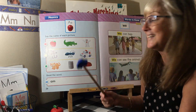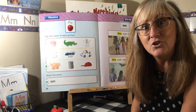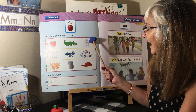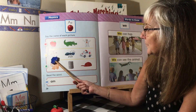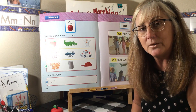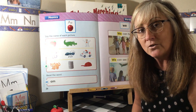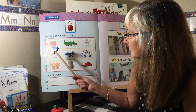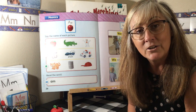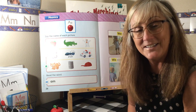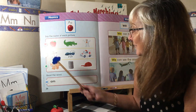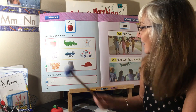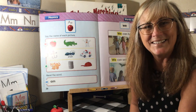Astronaut — say it with me: astronaut. I did hear 'ah.' Astronaut starts with A: ah, ah, ah! And over here is an anchor. An anchor is what they put on a boat and put down under the water so the boat won't move or float away — it's really, really heavy. Anchor starts with A: ah, ah, ah!